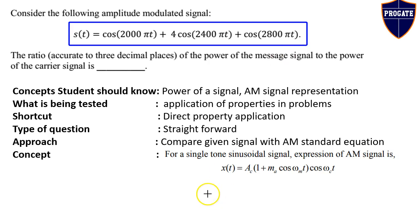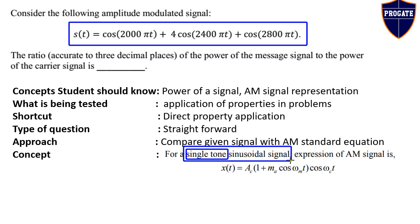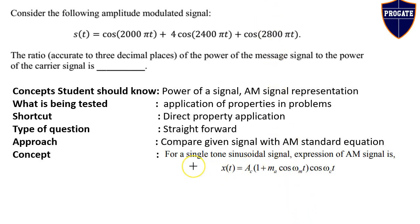For a single-tone sinusoidal signal — where 'single tone' means one frequency — the message signal m(t) is cos(ωm·t). The standard expression for the AM signal is: X(t) = Ac · [1 + MA · cos(ωm·t)] · cos(ωc·t), where Ac is the carrier amplitude, MA is the amplitude modulation index, ωc is the carrier angular frequency, and ωm is the message signal angular frequency.